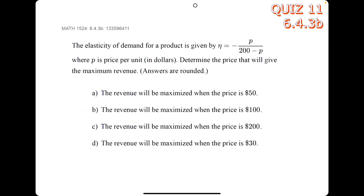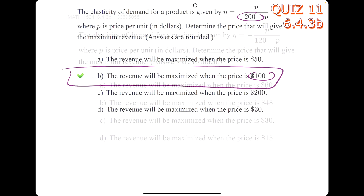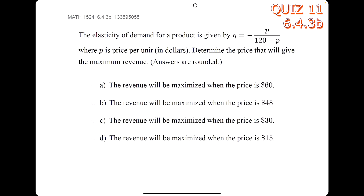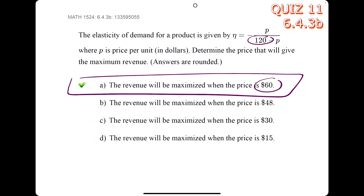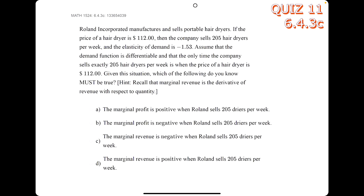In this problem, we take half of this value: 200 divided by 2 is 100. One more time, we take half of 120 to get 60, so a is our answer.